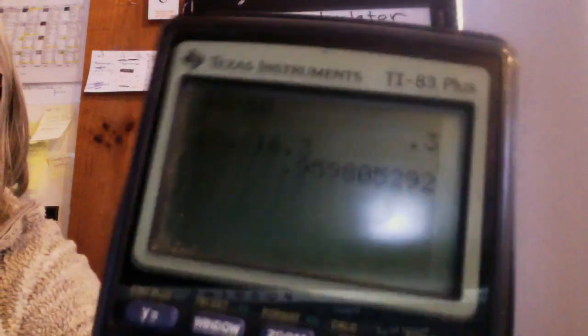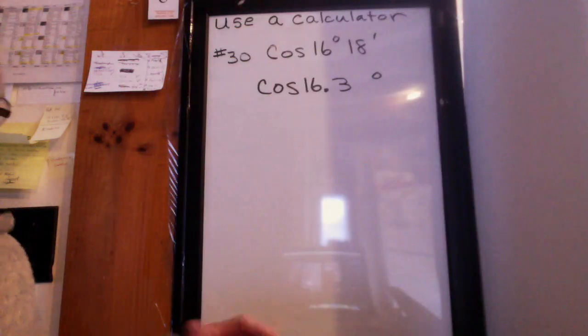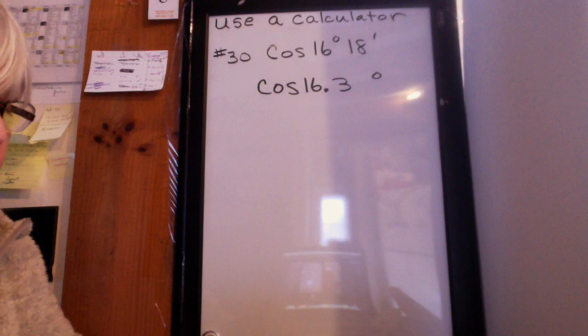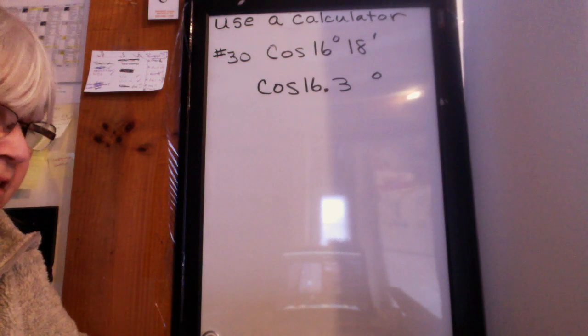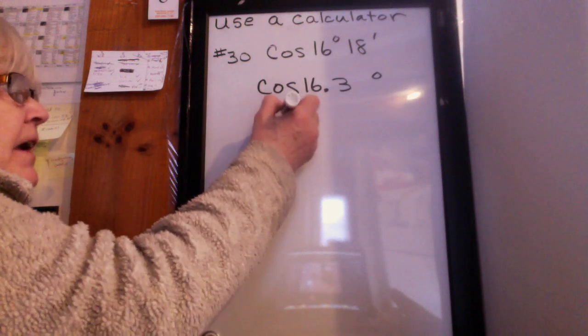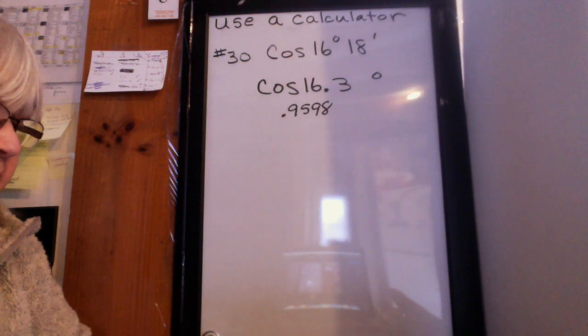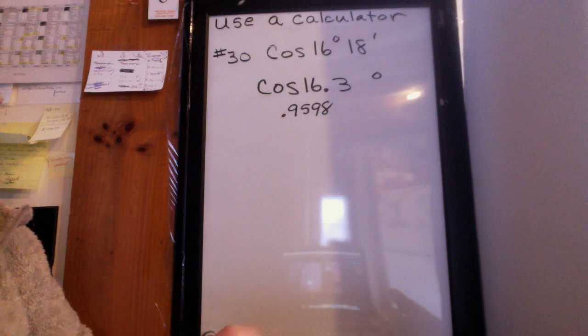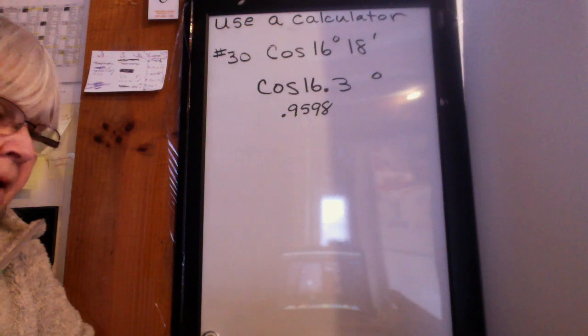And once you do that, you can read a decimal off of there. We want a decimal to four places. The directions in the book say to round to four places. So the answer comes out to be 0.9598. That's the decimal equivalent for cosine of 16 degrees 18 minutes.